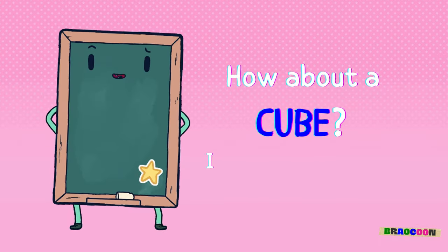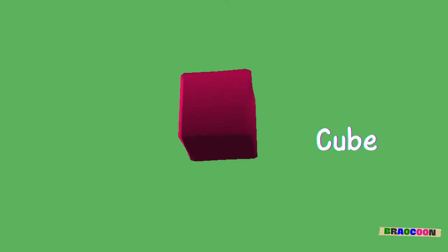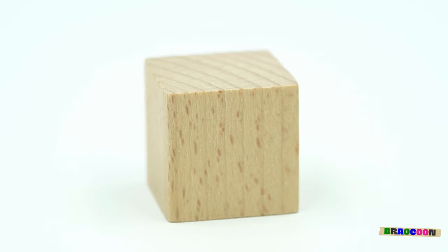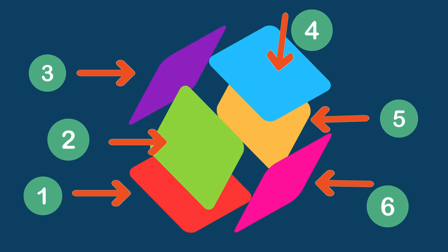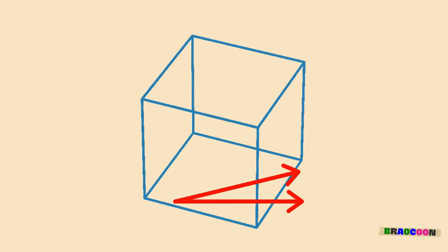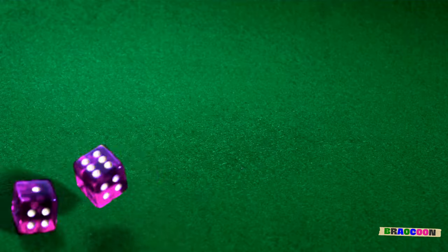How about a cube? Is it equally a 3D character? The cube is our second 3D character. It is like a perfectly shaped box, with six equal square sides. It looks the same from every angle, with every corner forming a right angle, just like the dice you use in board games.